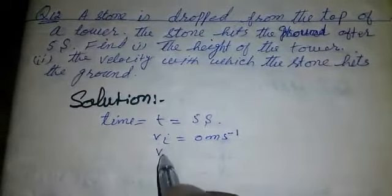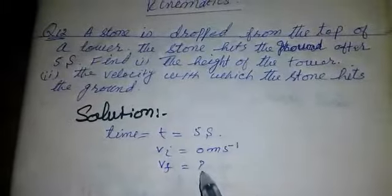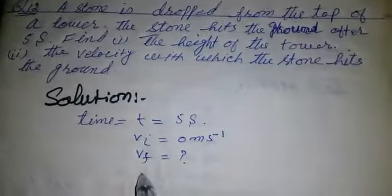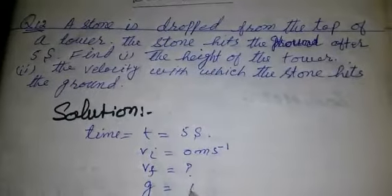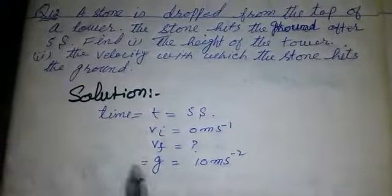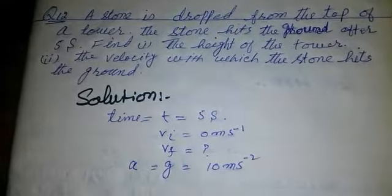And we have to find its final velocity. And the gravitational acceleration g is equal to 10 meters per second squared, or this is equal to acceleration a.